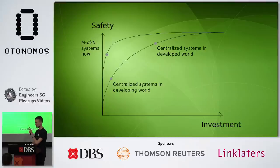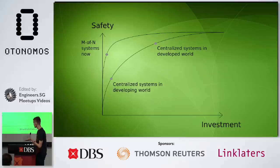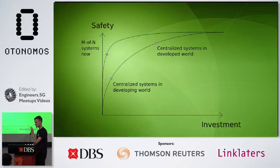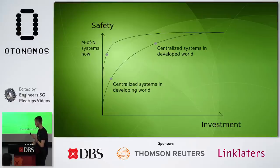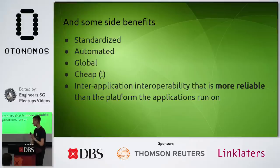A useful graph describes the notion between safety and cost, social capital, or regulation. Centralized systems in the developed world tend to already be safe but were expensive to build. Decentralized M-of-N systems are still a bit less safe due to technological risks and user-level security issues, but they're much cheaper. In many other places in the world, people have invested even more capital than blockchains can provide but have much lower levels of safety. There's a lot of potential in getting to the same reliability level but much cheaper.